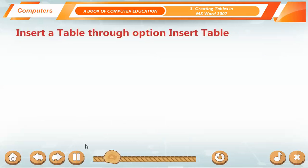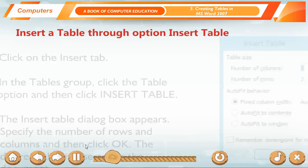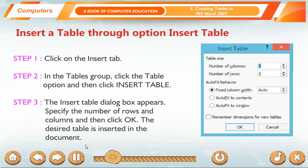Insert a table through option Insert Table. Step 1: Click on the Insert Tab. Step 2: In the Tables group, click the Table option and then click Insert Table. Step 3: The Insert Table dialog box appears. Specify the number of rows and columns and then click OK. The desired table is inserted in the document.